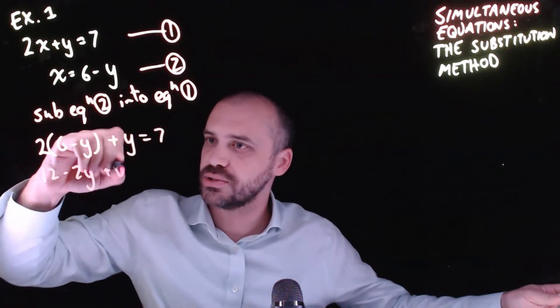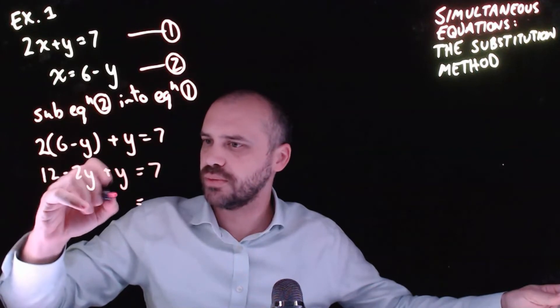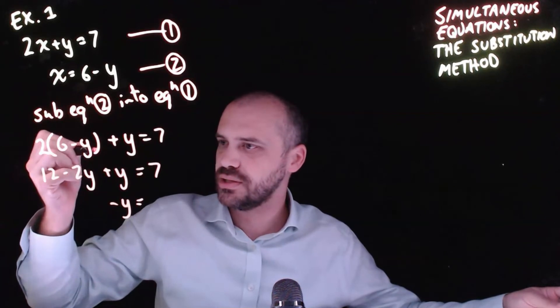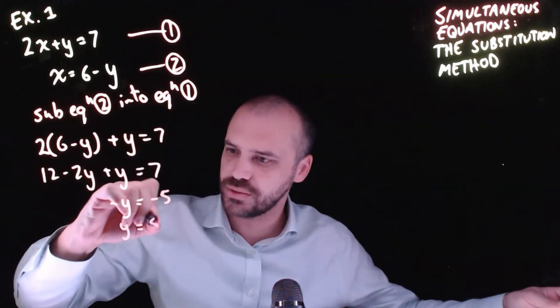12 - 2y + y = 7. Negative 2y plus y is negative y. 7 - 12 is -5, so y = 5.